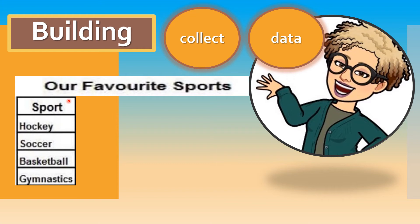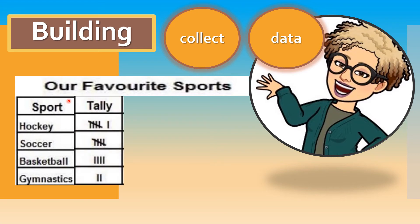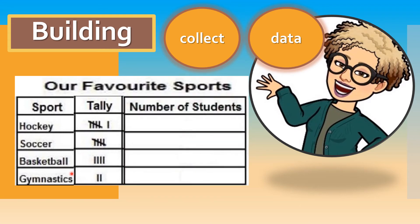Our second column is going to show the tallies. The children went around and found out how many people like hockey, how many people like soccer, how many people like basketball, and how many people like gymnastics. That's what the tallies are for. You have to remember what each amount of tally marks looks like in order to report the number of students that like each of the sports. We just built a tally graph.